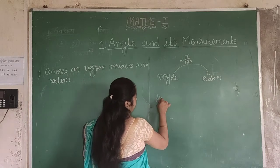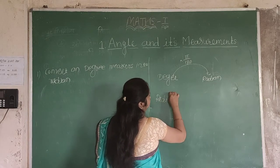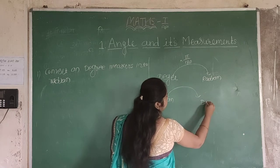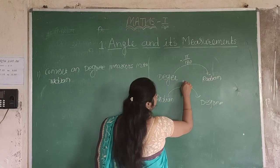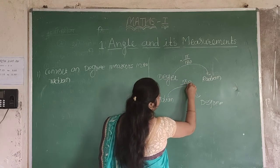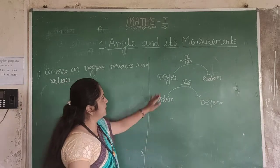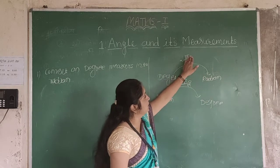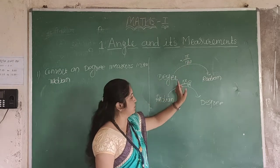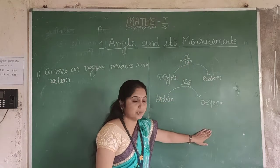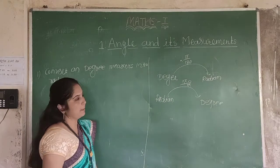As we know, to convert degree measure into radian measure, we multiply by pi by 180. And if we want to convert radian into degree measure, we multiply by 180 divided by pi. So: degree to radian — multiply by pi divided by 180; radian to degree — multiply by 180 divided by pi.